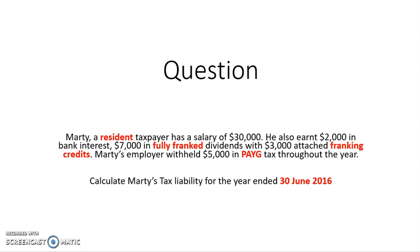I've highlighted a few terms in red to highlight a few things. 'Resident taxpayer' means that Marty, as an individual, is eligible for the low-income tax offset. It also means you need to use the tax rates specified for resident taxpayers. 'Fully franked' and 'franking credits' means you need to consider the franking tax offset later in the process. I've also highlighted 'PAYG tax', which we'll need to consider when offsetting our basic income tax liability. And '30 June 2016' is highlighted to make sure we use the correct tax bracket.